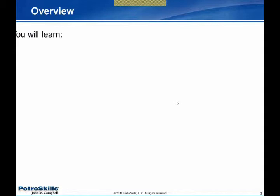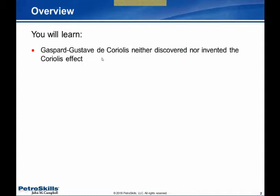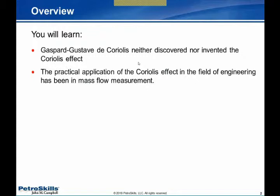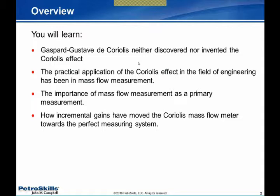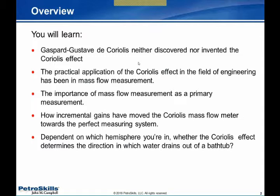Let's start with what we're looking at learning today. First, that the Coriolis effect was neither discovered nor invented by Coriolis himself. Second, that the practical application of the Coriolis effect in engineering has been in mass flow measurement. Third, the importance of mass flow as a primary measurement. Fourth, how incremental gains have moved the Coriolis mass flow meter toward being the perfect measuring system. And finally, whether the Coriolis effect determines the direction in which water drains out of your bathtub depending on which hemisphere you're in.